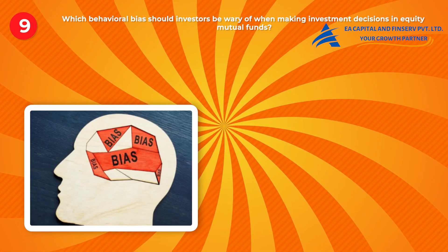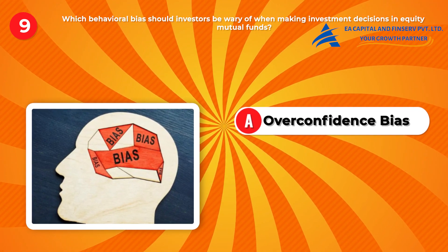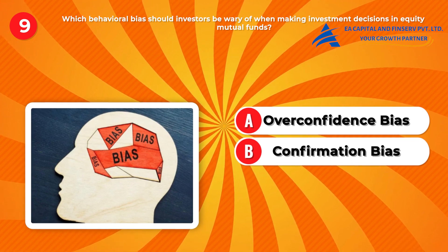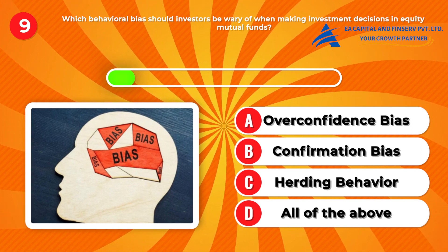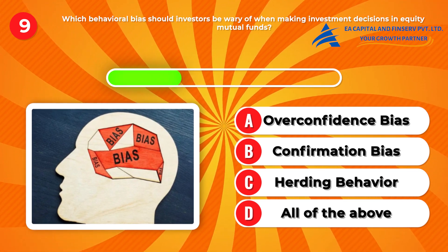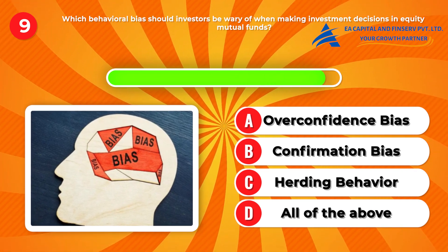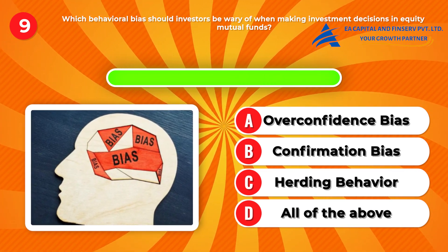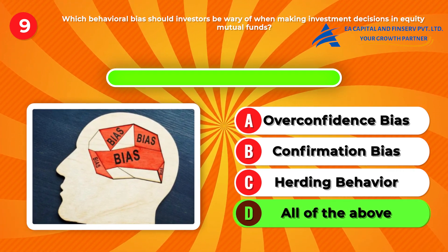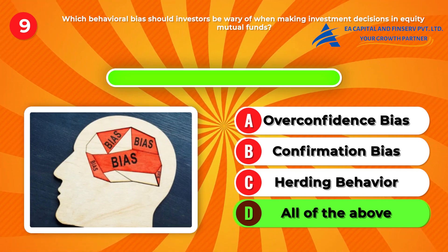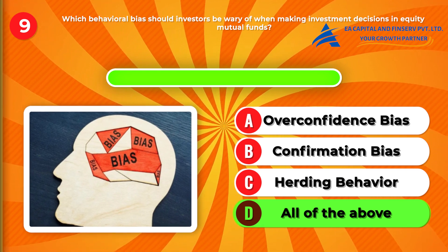Question nine: Which behavioral bias should investors be wary of when making investment decisions in equity mutual funds? A, overconfidence bias. B, confirmation bias. C, herd behavior. D, all of the above. Answer: D, all of the above. Behavioral biases can cloud judgment and lead to suboptimal investment decisions if not addressed consciously. Stay vigilant and mindful of biases that may influence your investment choices.